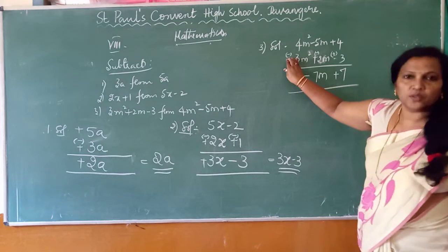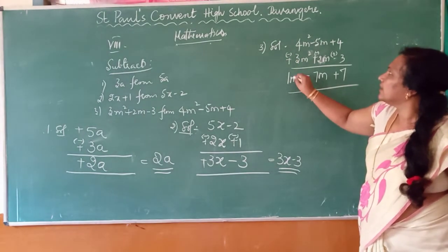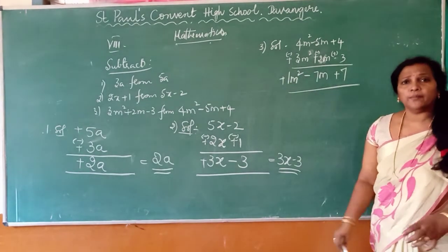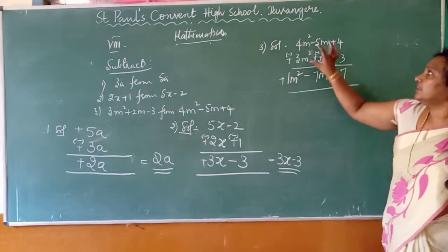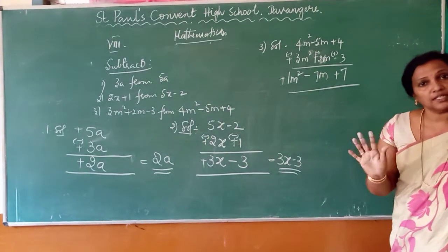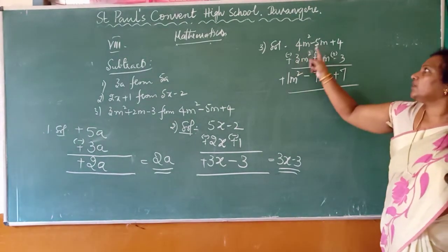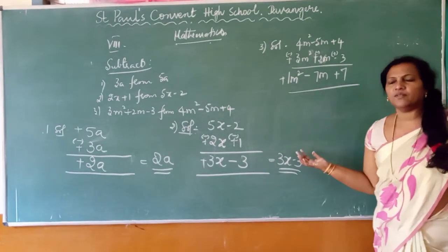Again, different signs you have to subtract. Four minus three is one. Greater number sign is... You should only remember, you have to consider only the coefficients, not the variables. You should not say M² plus M² equals M to the power of four. That is not there. In addition or subtraction, you should consider only the coefficients. Got it? This is the example I have given.